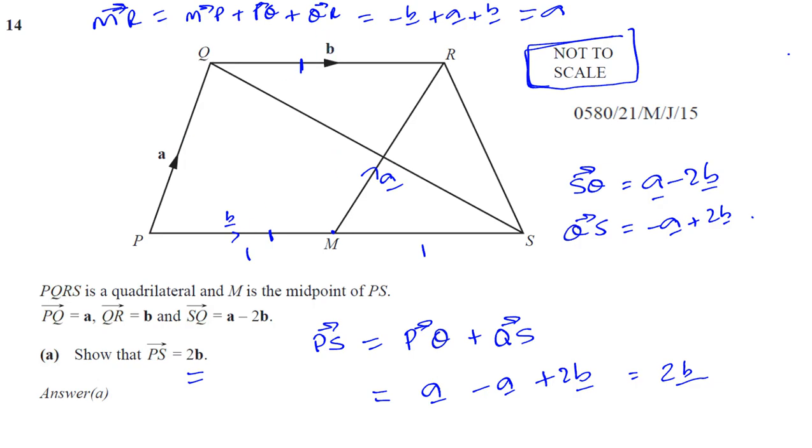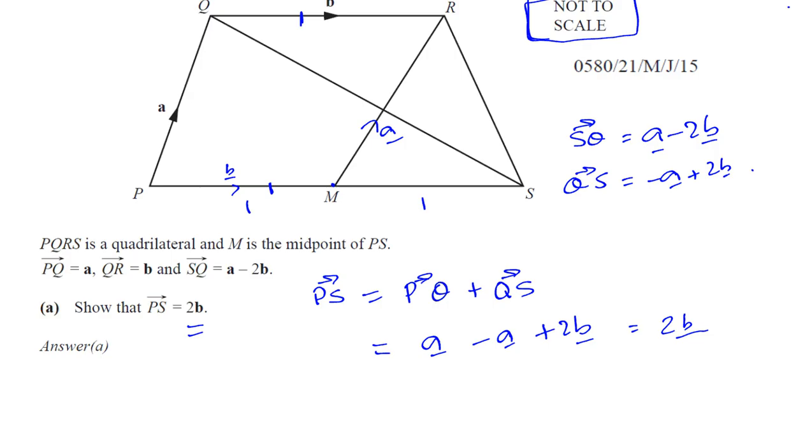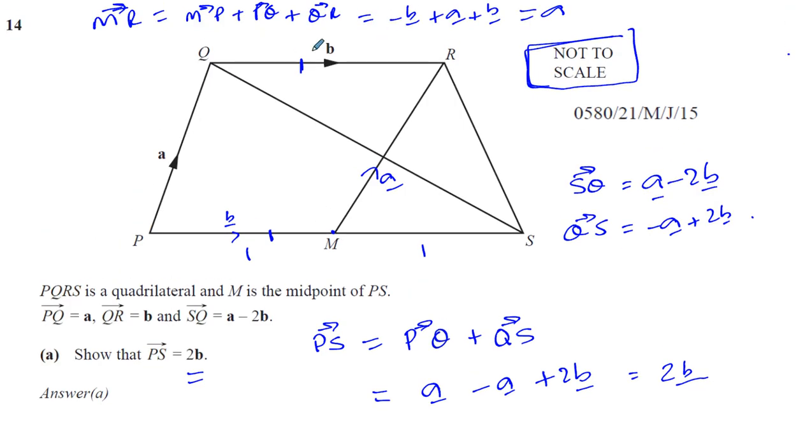Now, for those who say, oh, I think it's a rhombus, well, you don't know that vector A and B are the same length. There's nothing to say that the magnitude of vector A and the magnitude of vector B are the same.